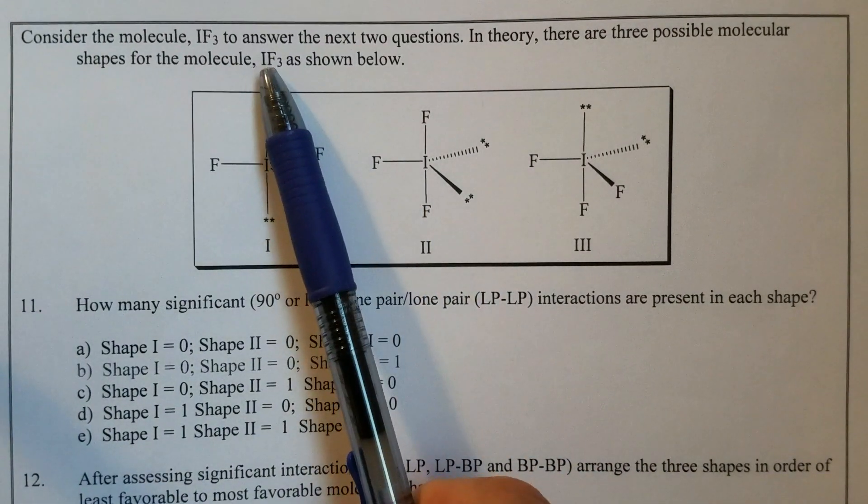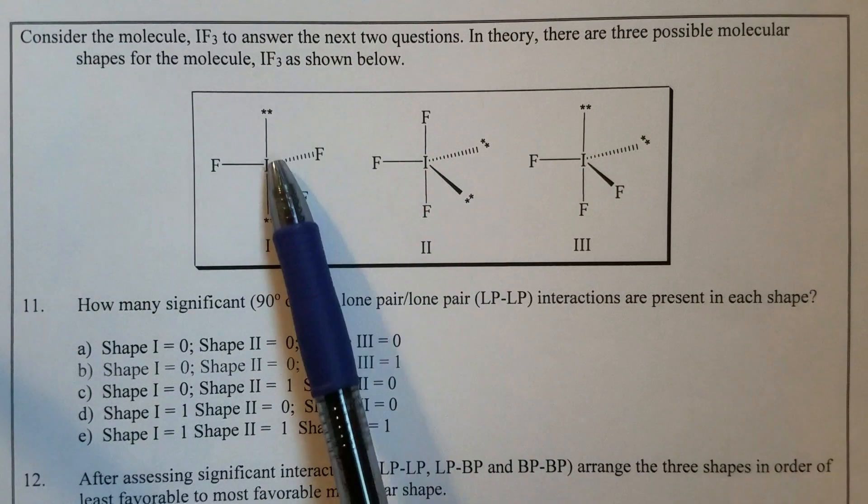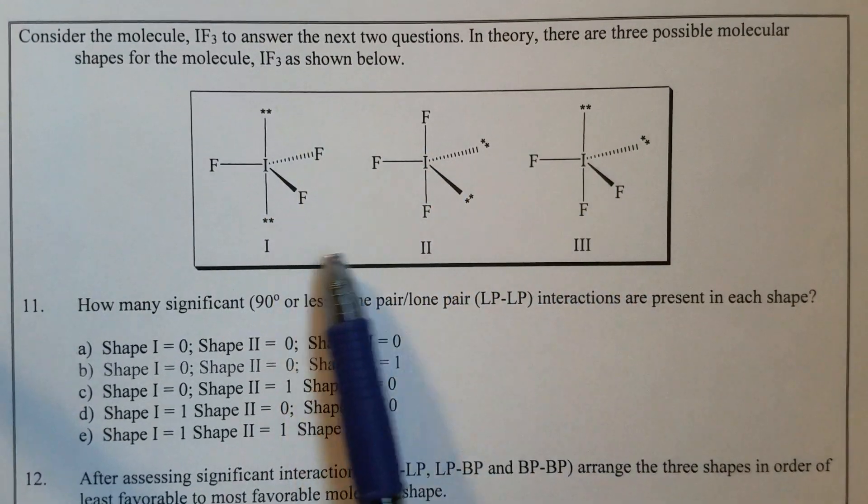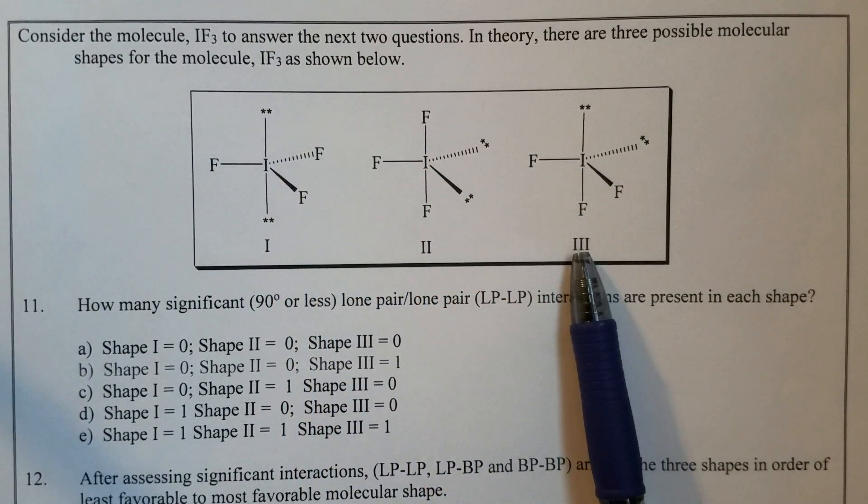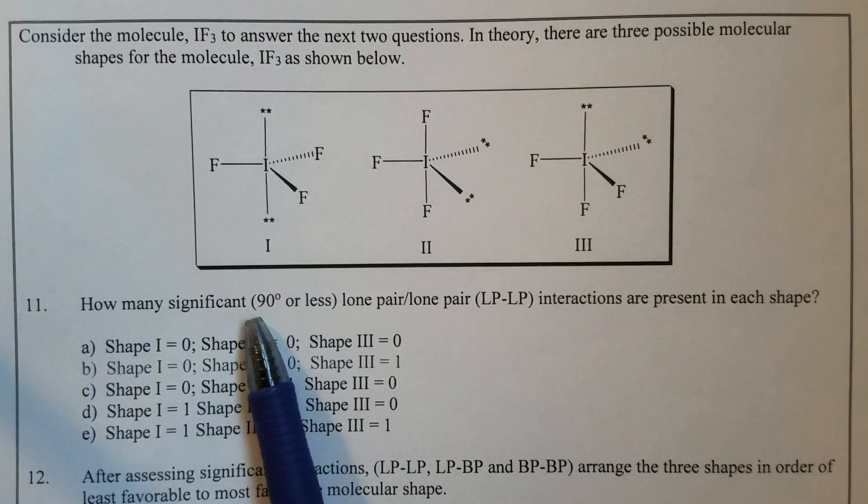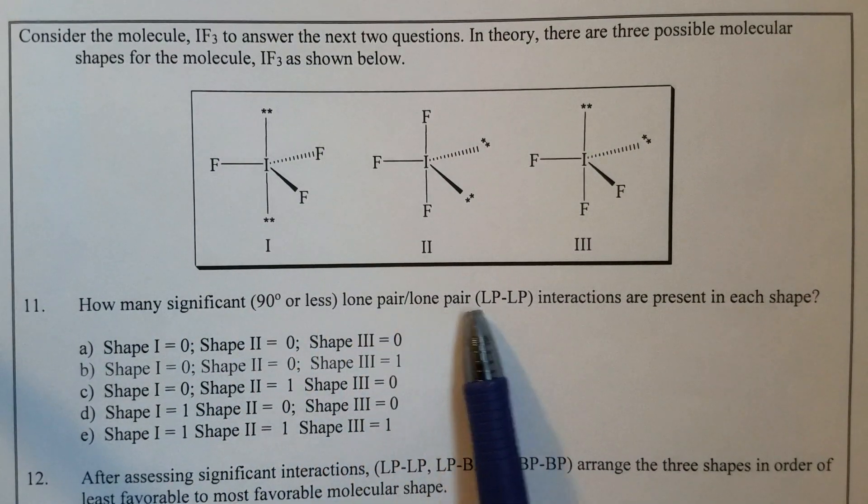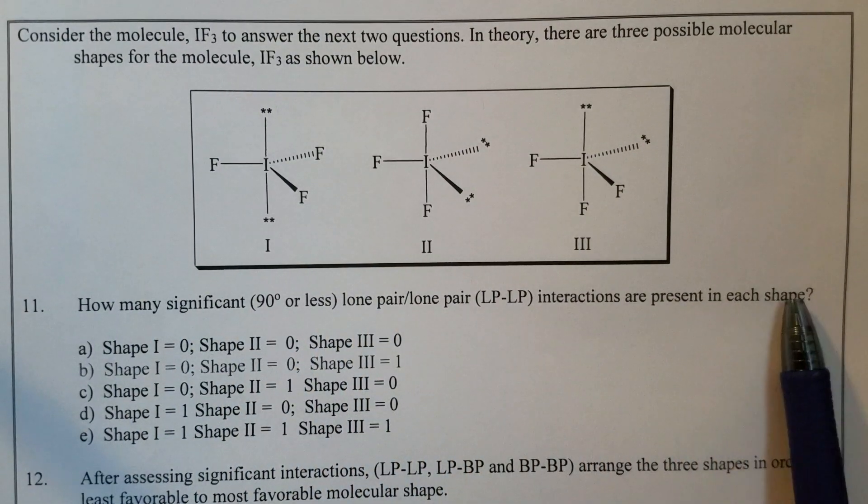In theory, iodine trifluoride can have these three possible shapes. How many significant lone-pair-lone-pair interactions are present in each shape?